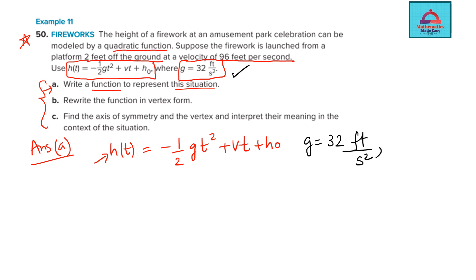Also, you are given the height here. So here, the value of h naught will be 2 feet that you will put. And also, you are given the velocity. So velocity is the value of variable v. So this is given to be 96 feet per second.